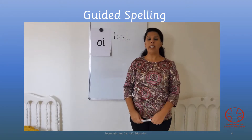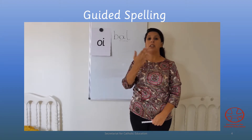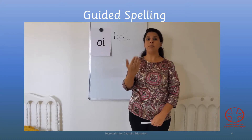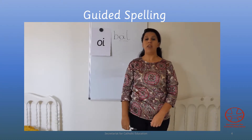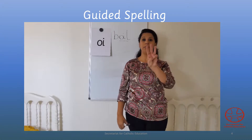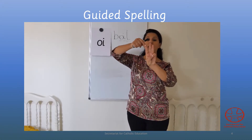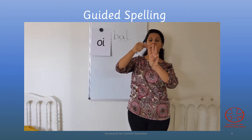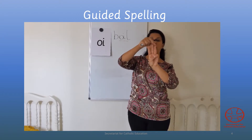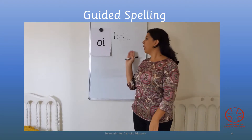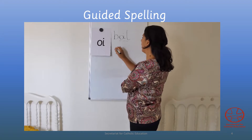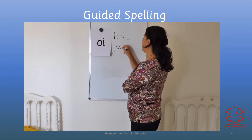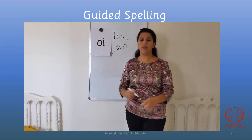Our next word is 'join'. Join has three sounds. Show me three fingers. Spell it: j, oi, n. Join. Let's write it on my board: J, oi, n. Underline my special friends.